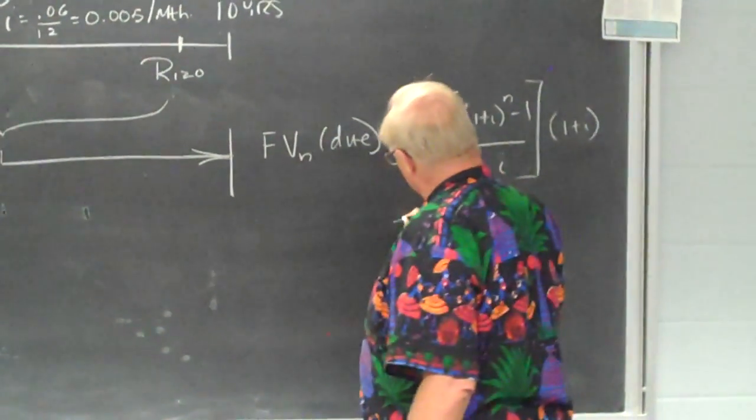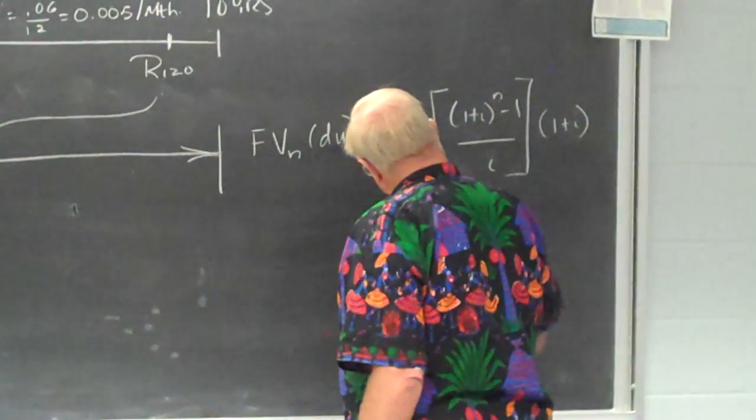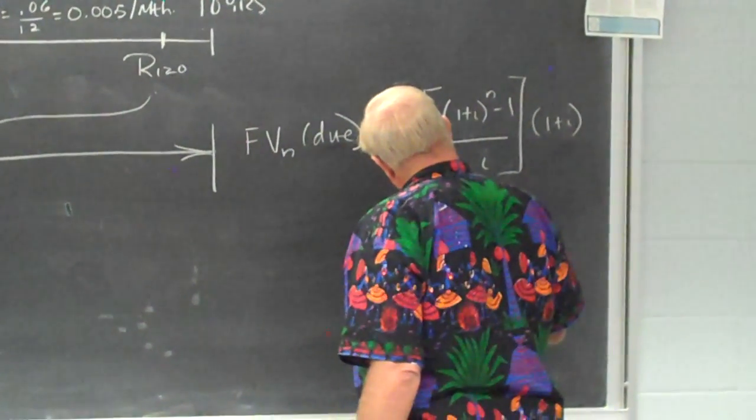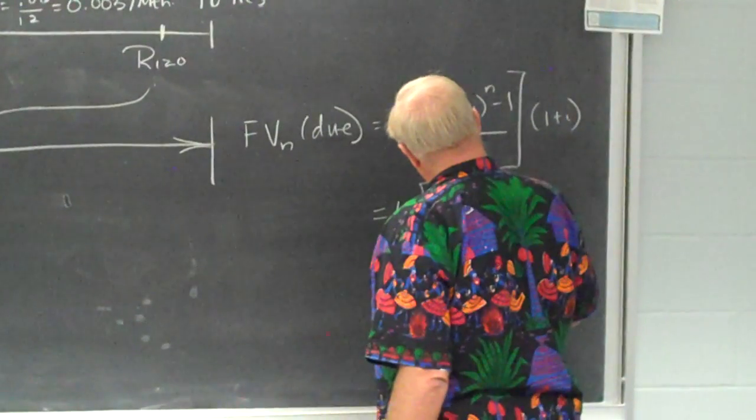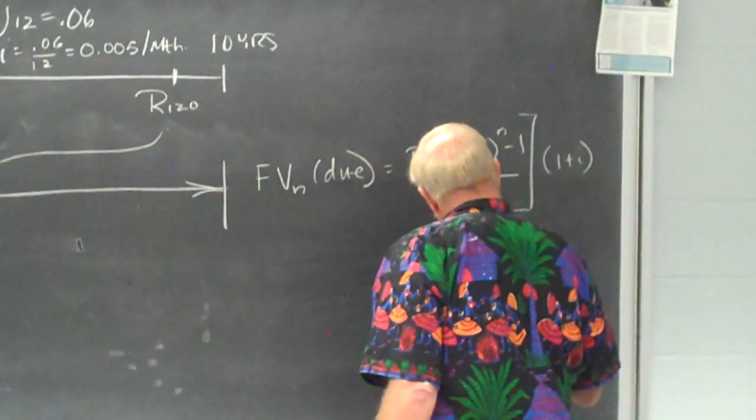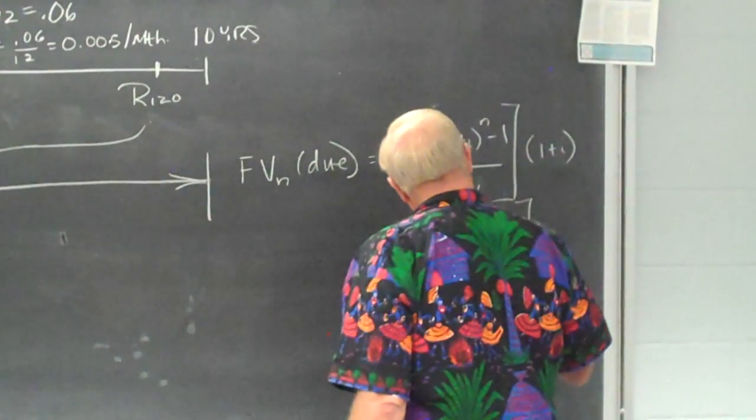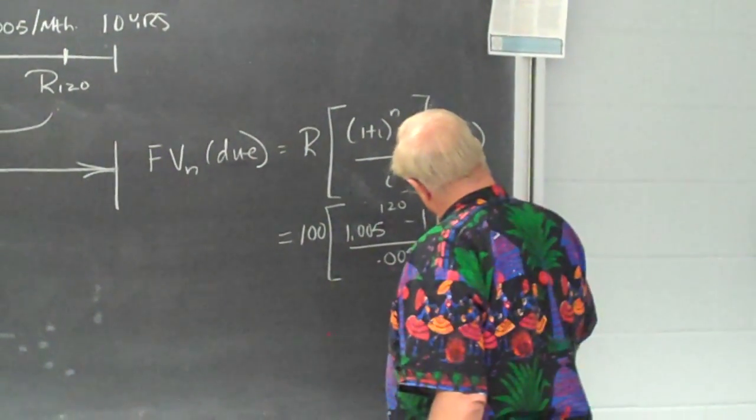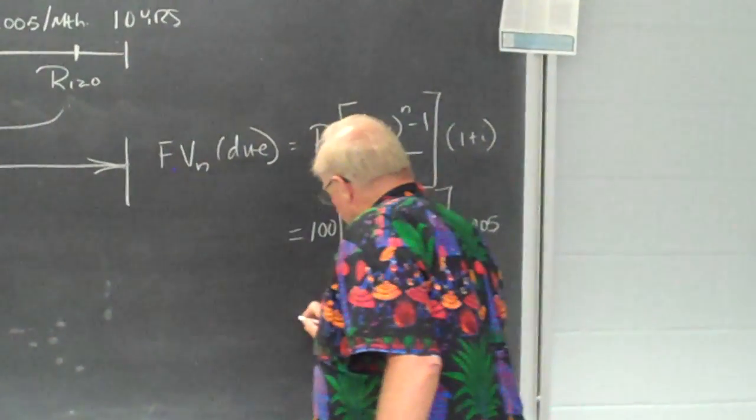So we have, in this case, $100 times 1.005 to the 120 minus 1 divided by 0.005, and multiply this by the 1 plus i, which is 1.005.